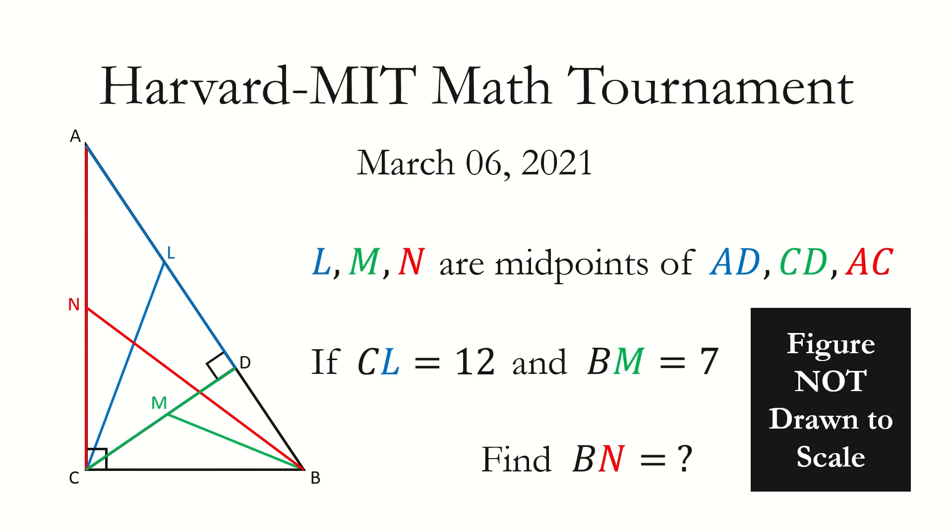Here, L, M, N are the midpoints of AD, CD, and AC. We are given the length of CL and BM, and we want to find the value of BN. So let's get started.